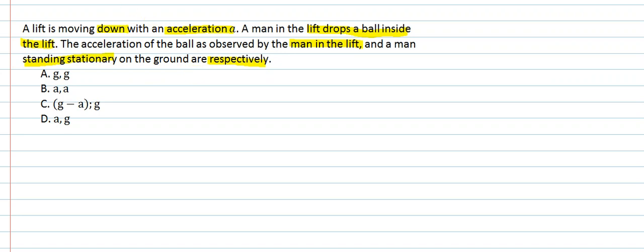There are two observers. One observer is standing outside the lift and one observer is standing inside the lift. The observer inside the lift is dropping a ball, and we will determine what the acceleration of the dropped ball will be with respect to both observers.